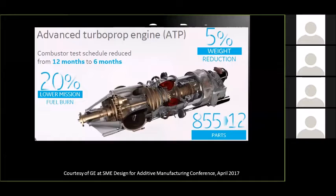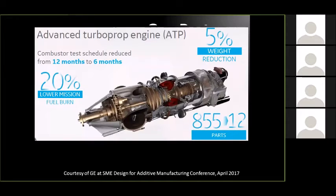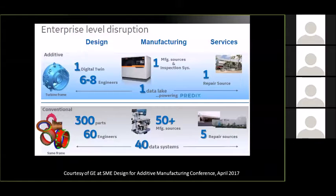GE also talked about their turbo prop — going from 855 parts down to 12 sub-assemblies with 3D printed applications. Great results, as you can see on screen. But again, the question for the conventional folks is: what happened to the contracts on those 855 parts? And that's the story they're starting to see.